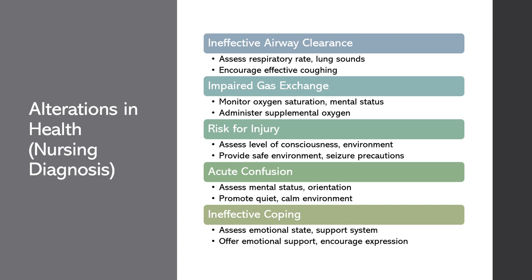Moving on to acute confusion. Clinical manifestations may include disorientation, agitation, or memory impairment. We would assess patients' mental status, orientation, and cognitive function. To help patients, we could provide a quiet, calm environment, reorient them frequently, and ensure their safety. The rationale is to promote cognitive function and minimize the risk of injury due to confusion. We would educate patients and families on the signs of acute confusion and the importance of seeking help if confusion persists or worsens.